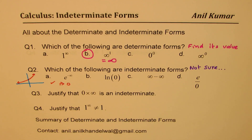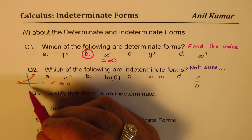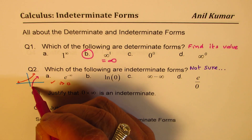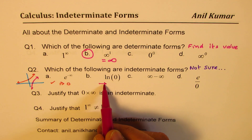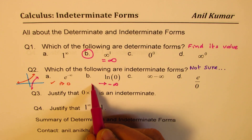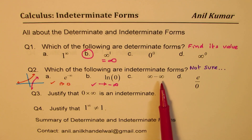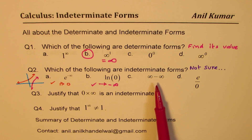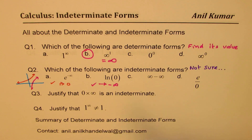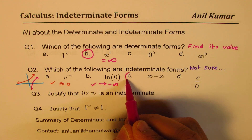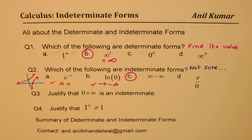ln zero — if I sketch it, the graph approaches negative infinity. So we know about it. But if we have two quantities which are very large and we subtract one from the other, we are not very sure what we are going to get. So that is indeterminate.